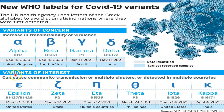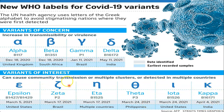Variants of interest are those that can cause community transmission, multiple clusters, or have been detected in multiple countries. These include: Epsilon (March 5, 2021, United States), Zeta (March 17, 2021, Brazil), Eta (March 17, 2021, multiple countries), Theta (March 24, 2021, Philippines), Iota (March 24, 2021, United States), and Kappa (April 4, 2021, India). Alpha, Beta, Gamma, and Delta are classified as variants of concern.